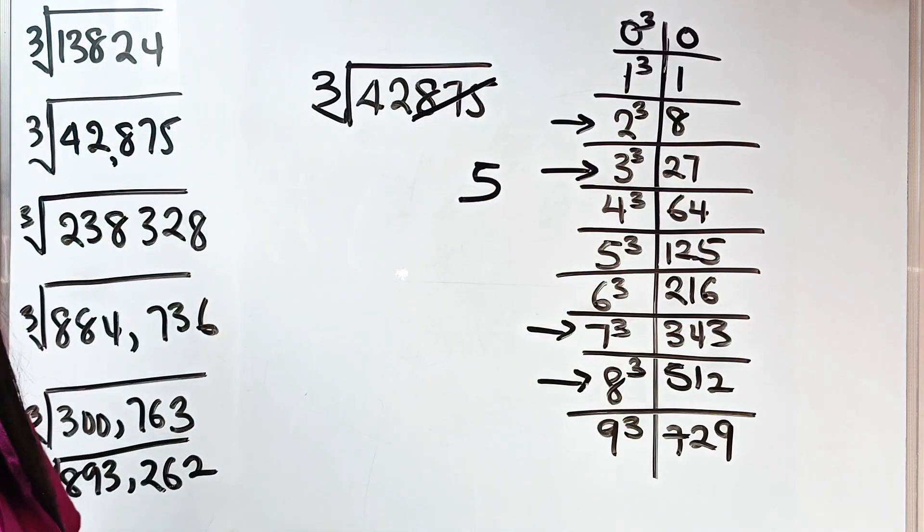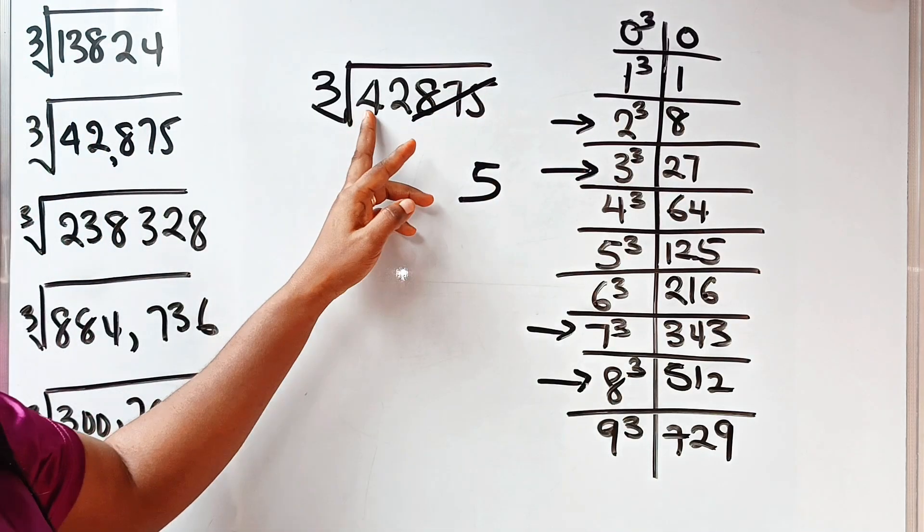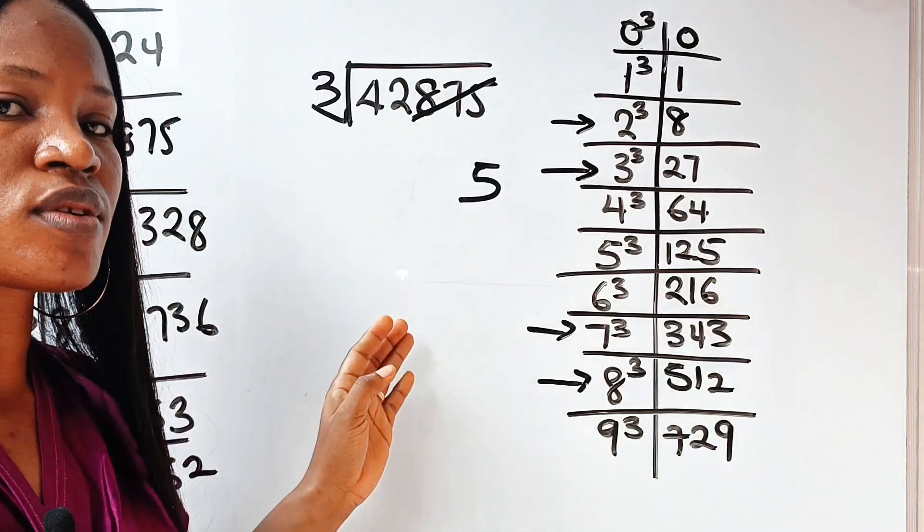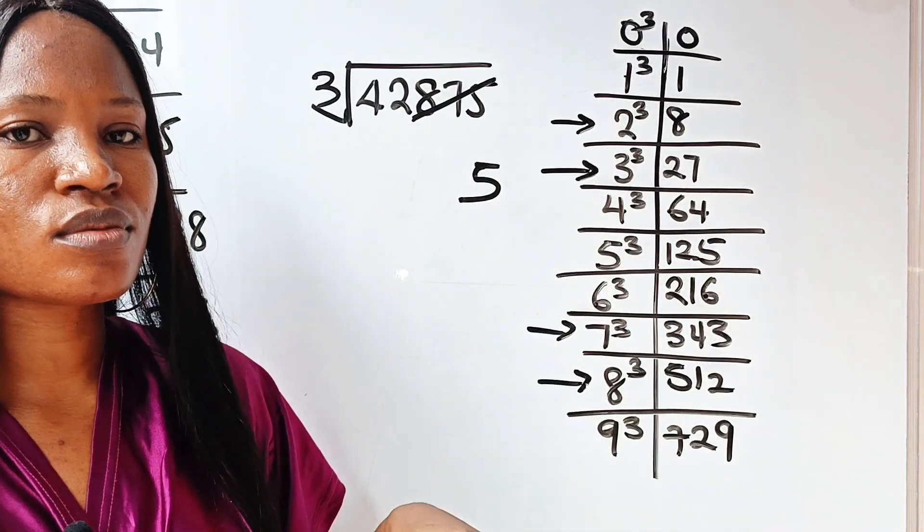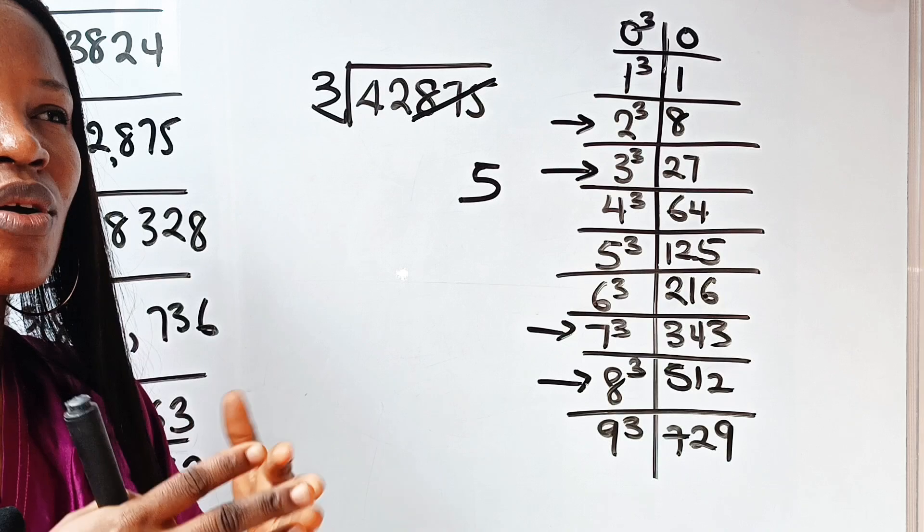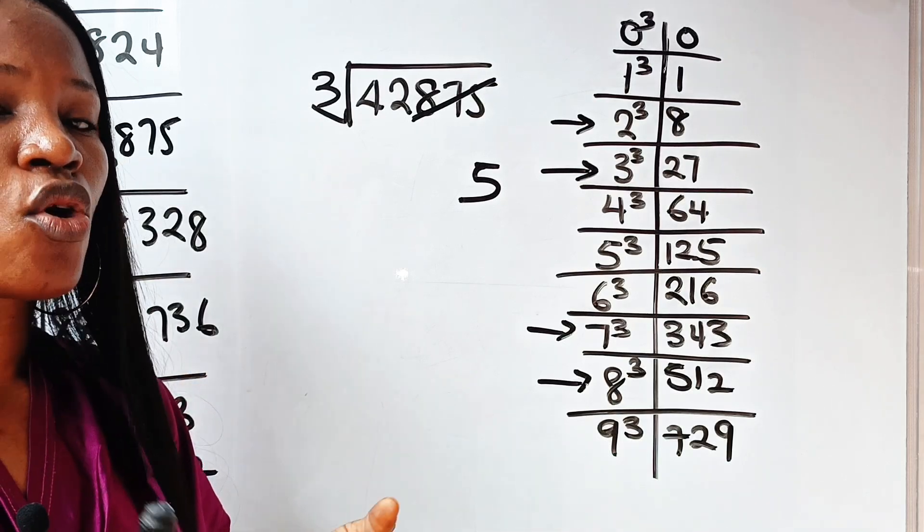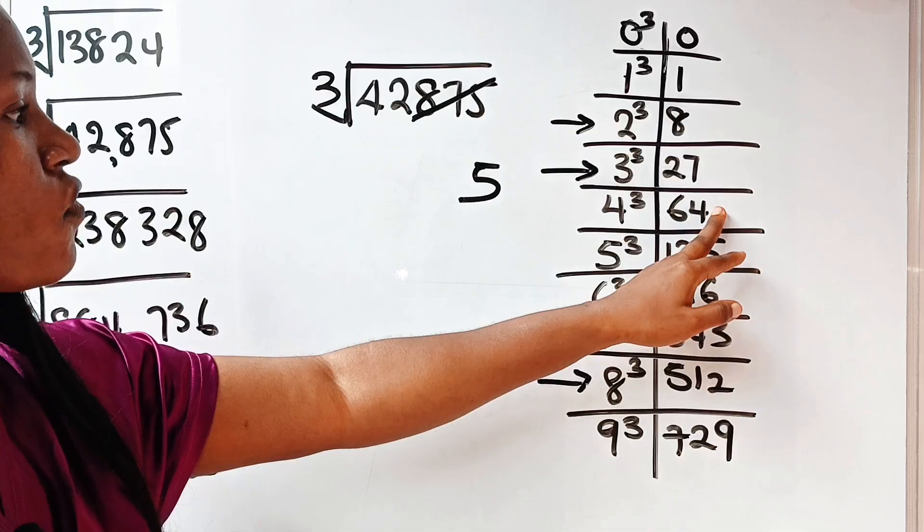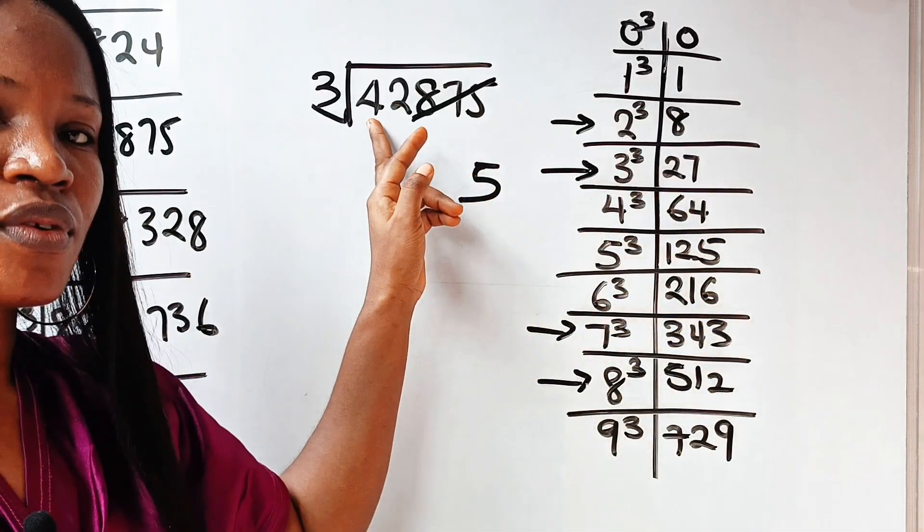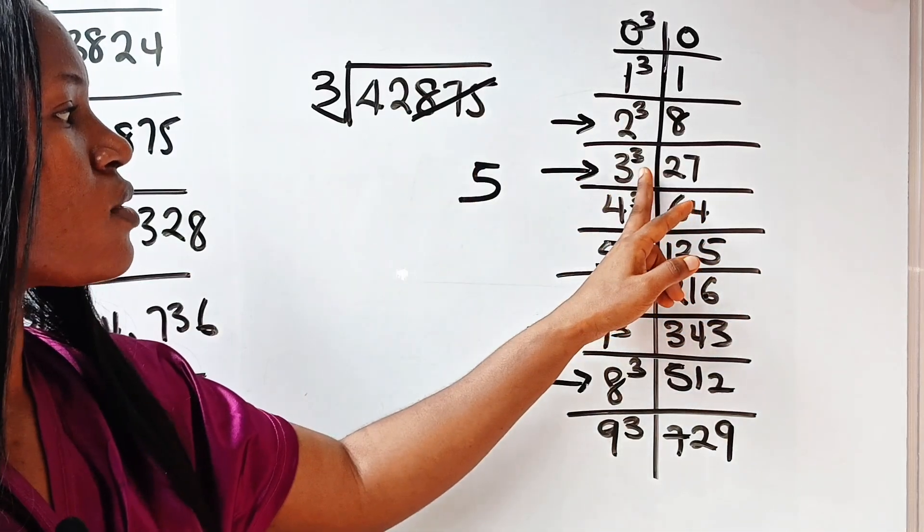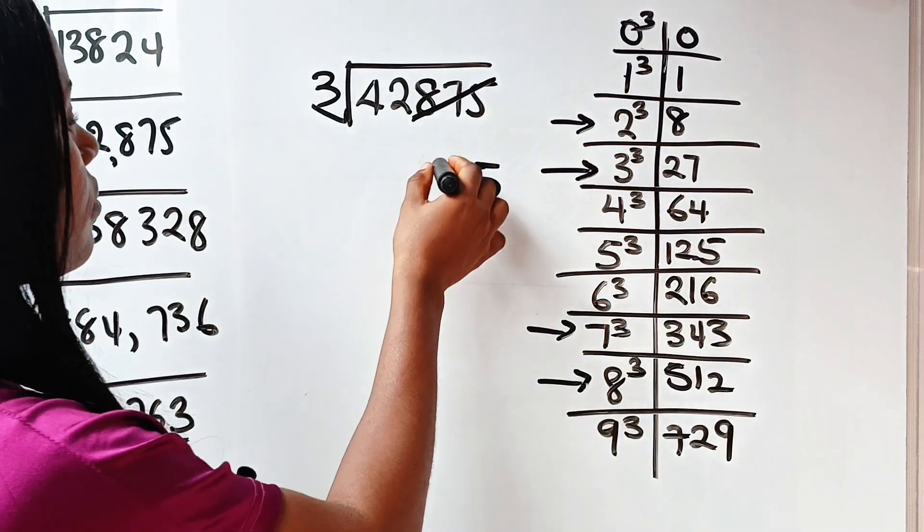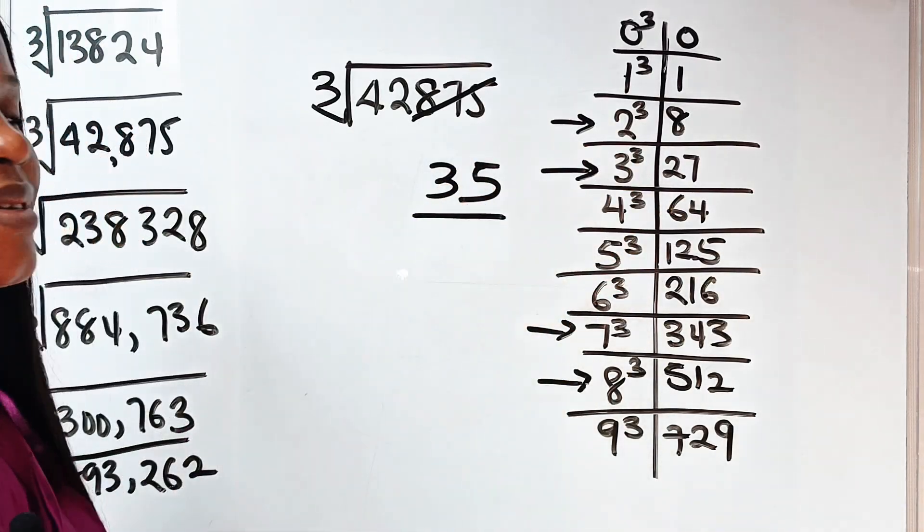Cancel the last 3 digits. Now, we need, what number cubed will give us a number that is close to 42, but not more than 42? So that should be 3, because 3 cubed is 27, but 4 cubed is 64. You can see that. So 64 is already more than 42. So it means that we need to go for 3, which is 27. So we are going to pick 3. And that is the answer.